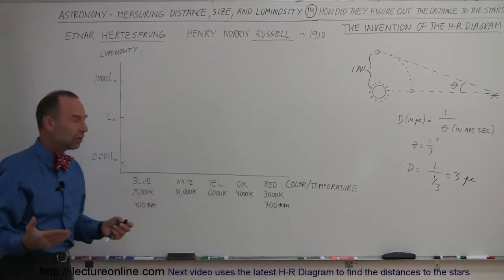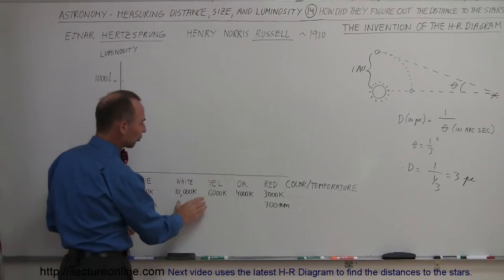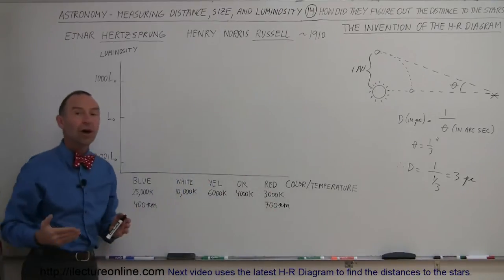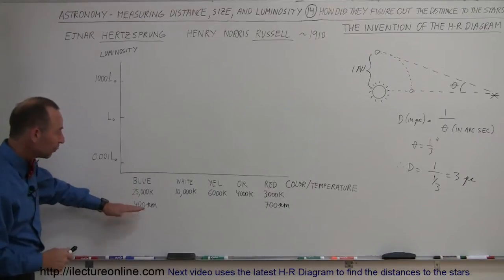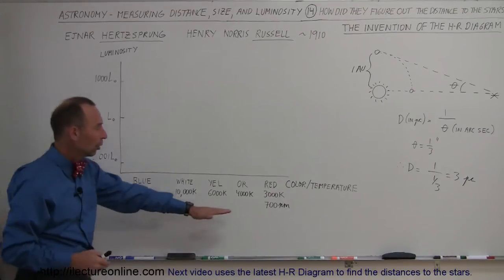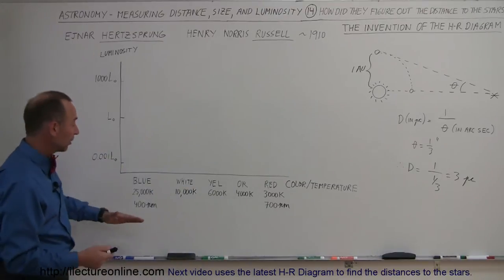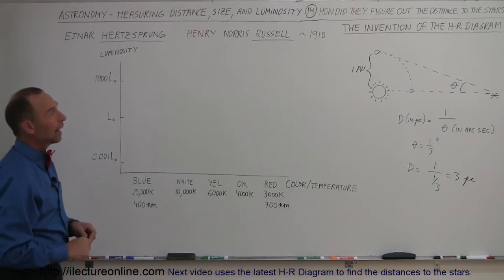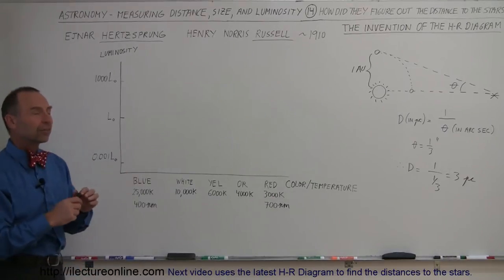And of course, we have already learned that with Wien's law, the color of the star is associated with the temperature of the star, which is associated with the wavelength of the radiation that's being emitted from those stars, anywhere from 400 to 700 nanometers, depending upon if it's a blue star or a red star.